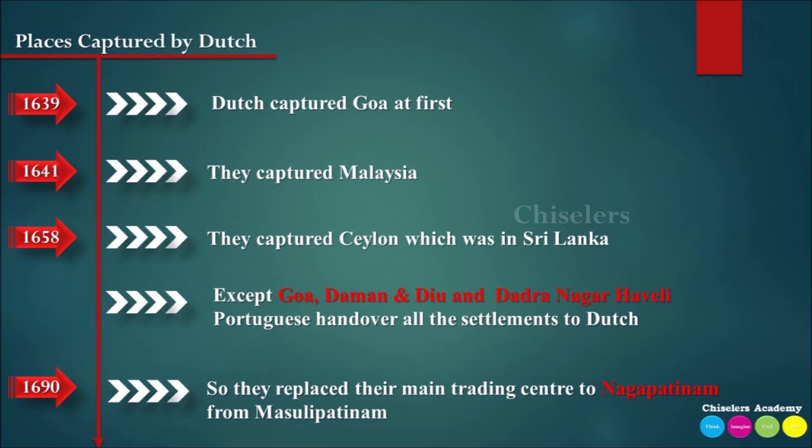In their expansions outside India, they captured Goa, and in 1541 captured Malaysia. In 1558, they captured Ceylon (Sri Lanka), increasing Dutch expansion beyond the Indian subcontinent.